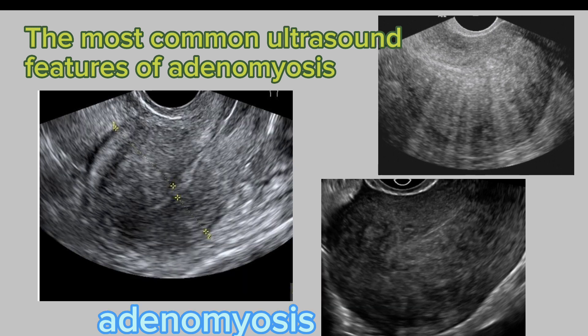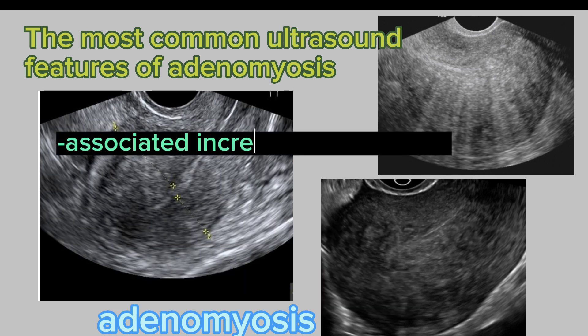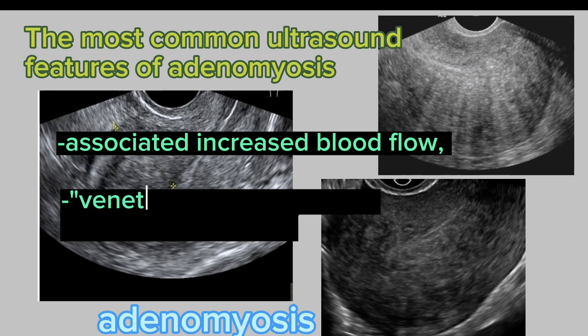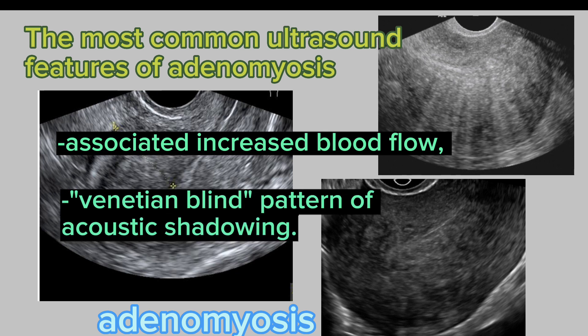There is associated increased blood flow due to an increased number of tortuous vessels penetrating the myometrium. Venetian blind pattern of acoustic shadowing is also present.